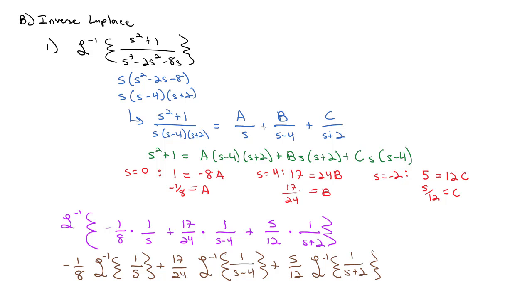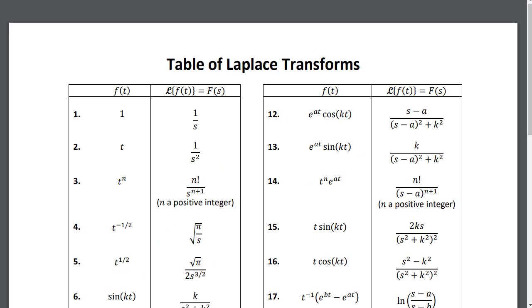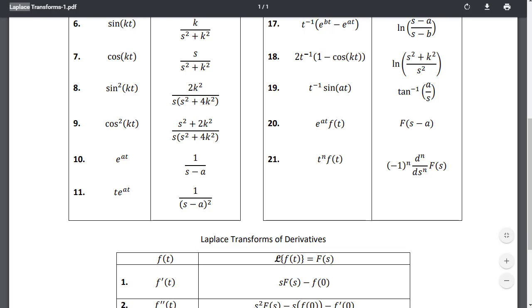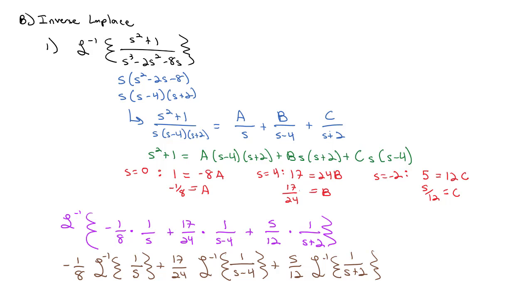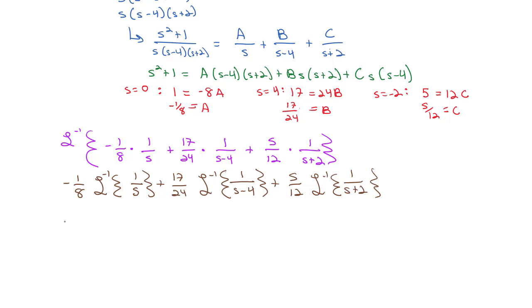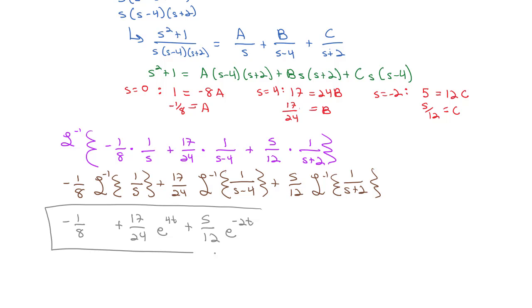Going to our Laplace transform table, function number 1 shows that 1/s reduces to just 1, and function number 10 shows that 1/(s minus a) reduces to e to the at. Using those properties, we end up with negative 1/8 times 1, plus 17/24 times e to the 4t, plus 5/12 times e to the negative 2t. That's the result of our inverse Laplace transform.